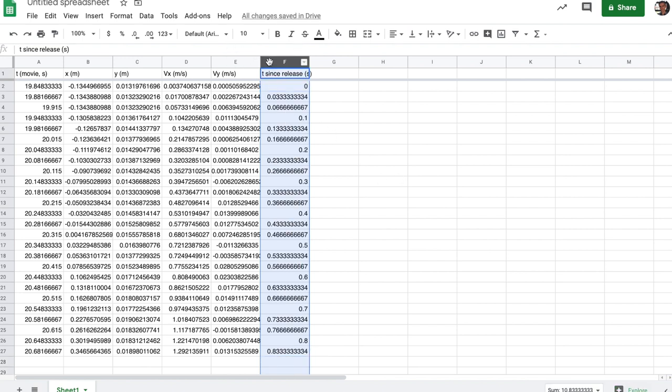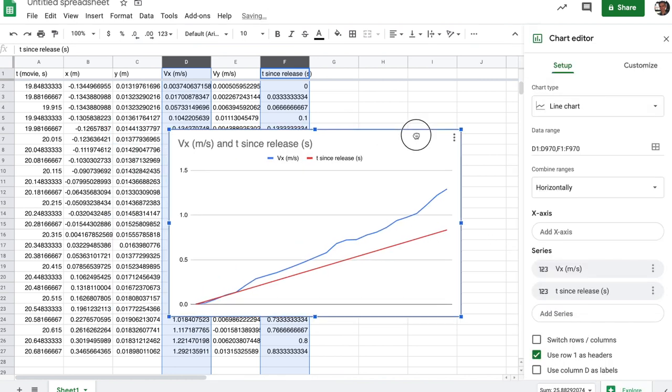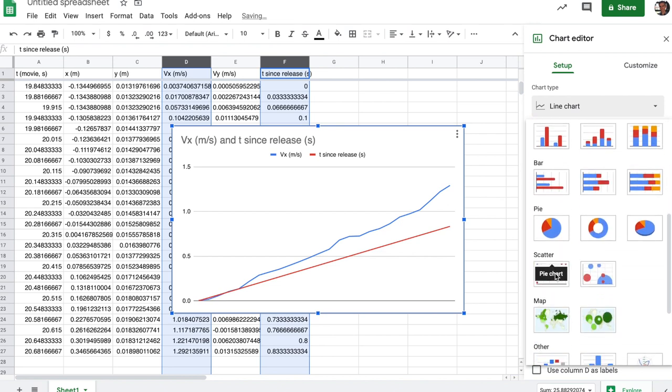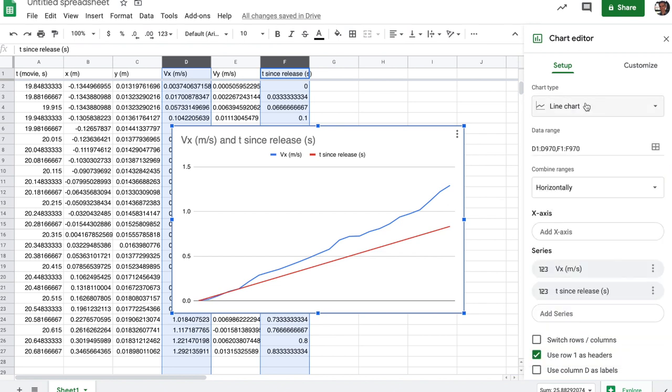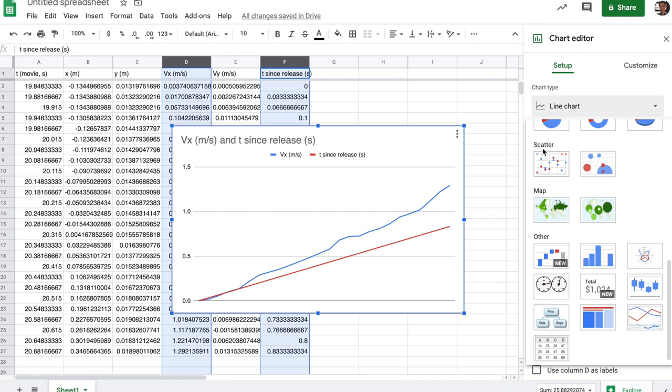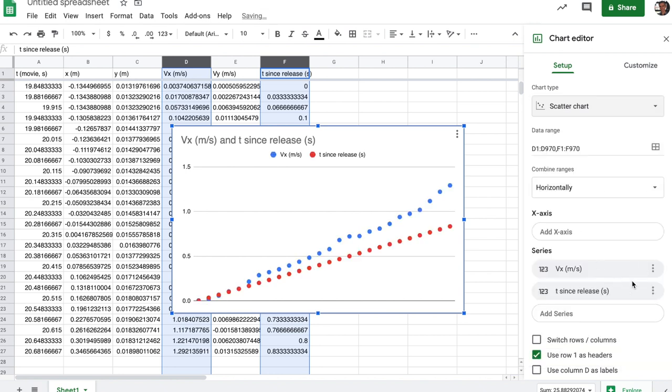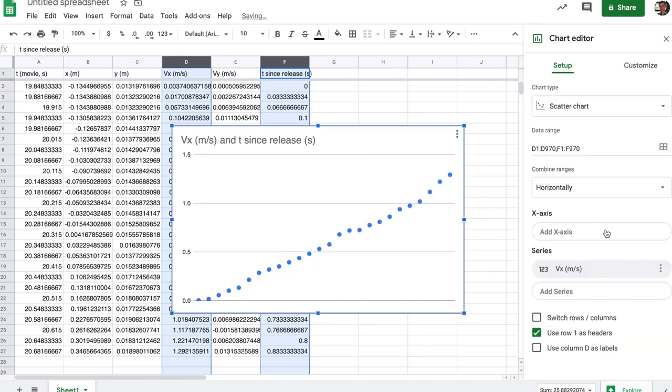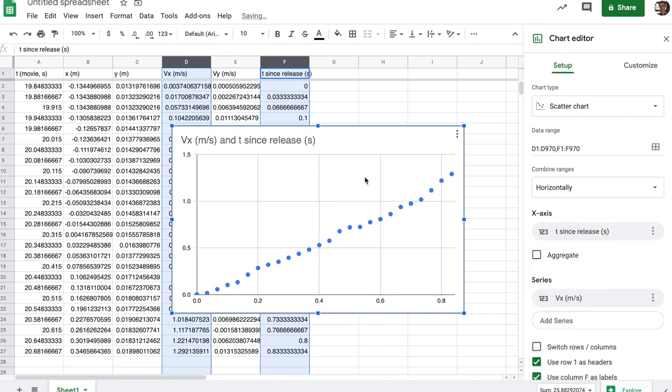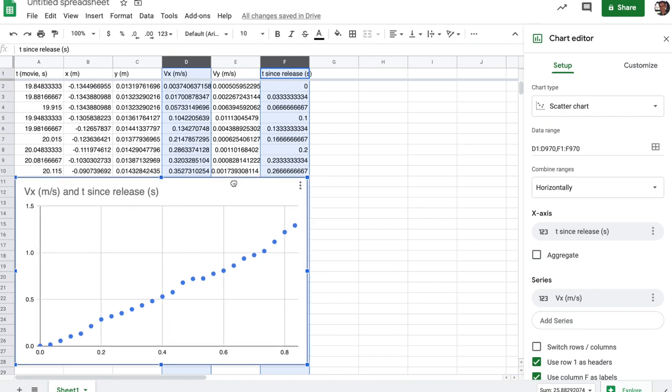So now we're all set to make a plot of my x coordinate and my t coordinate here, and I can go ahead and insert a chart. I will want a scatter chart. I will want the time since release to be the x axis, so I'll use that as the time since release, and I can go ahead and include all my fits and everything from that.